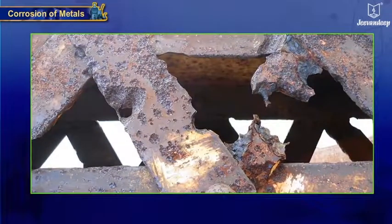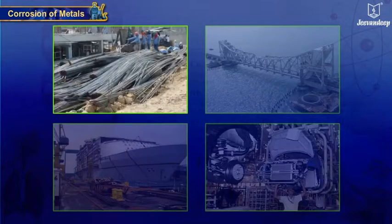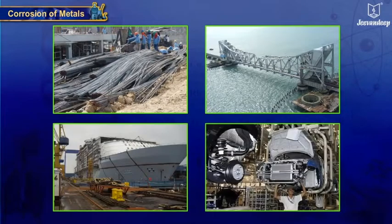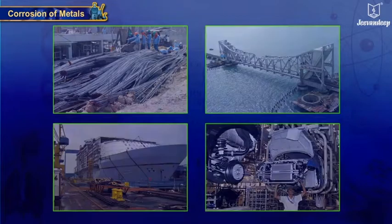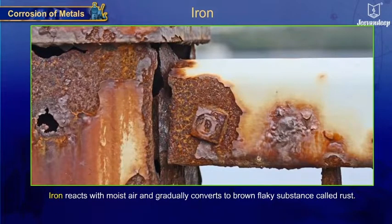Corrosion in iron causes a great deal of damage as iron is widely used as a structural material in constructions, bridges, shipbuilding, automobiles, etc. Iron reacts with moist air and gradually converts to a brown flaky substance called rust.